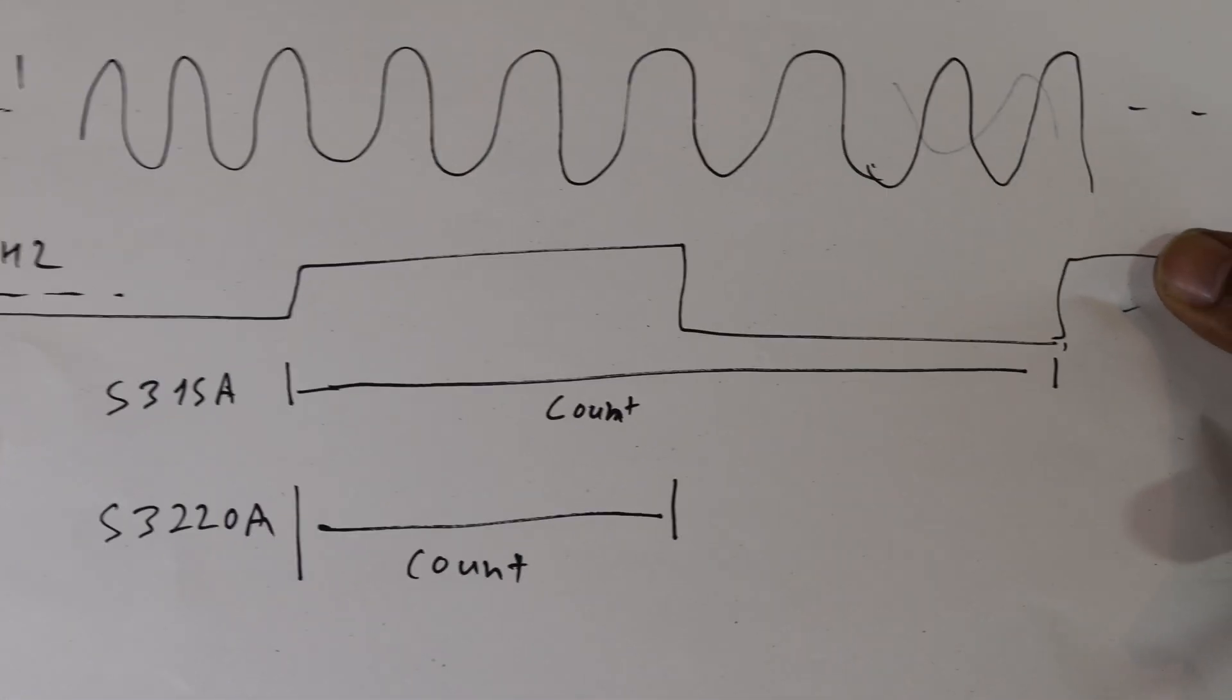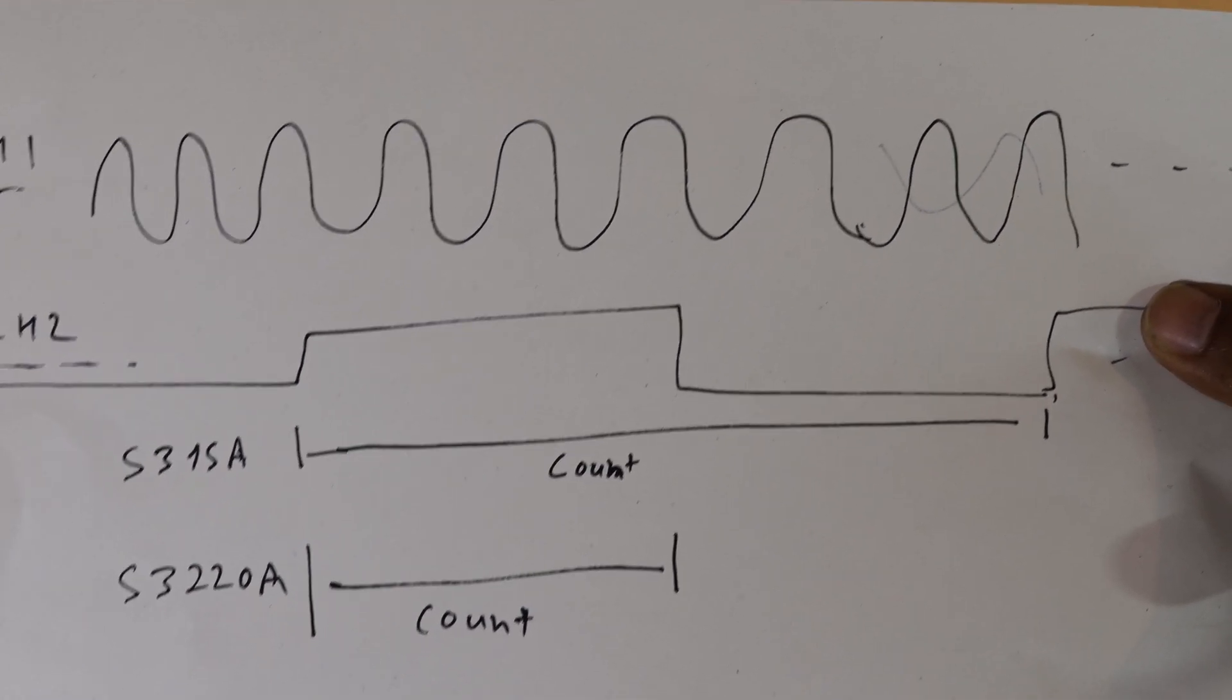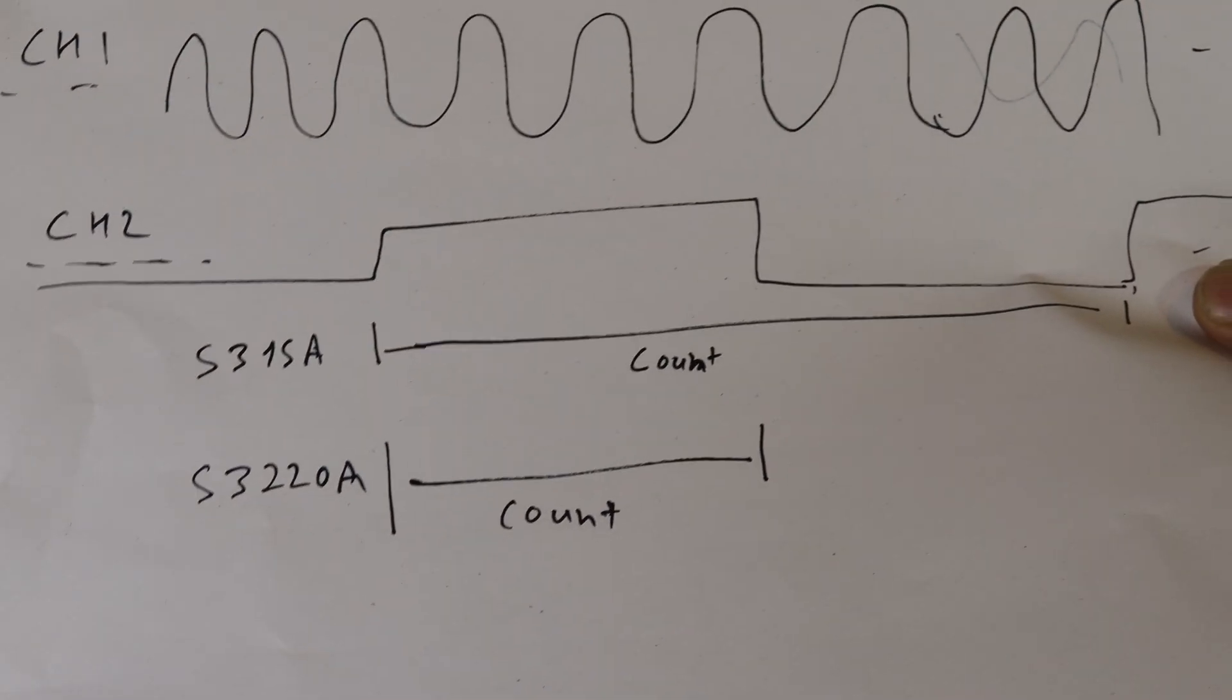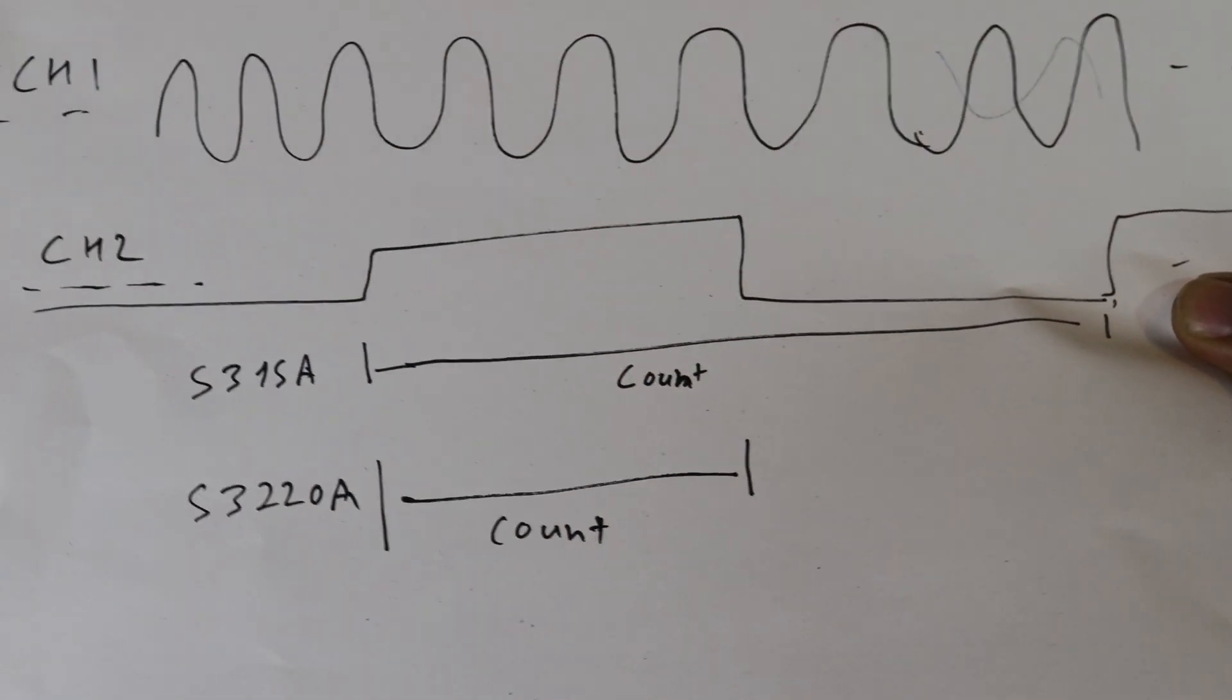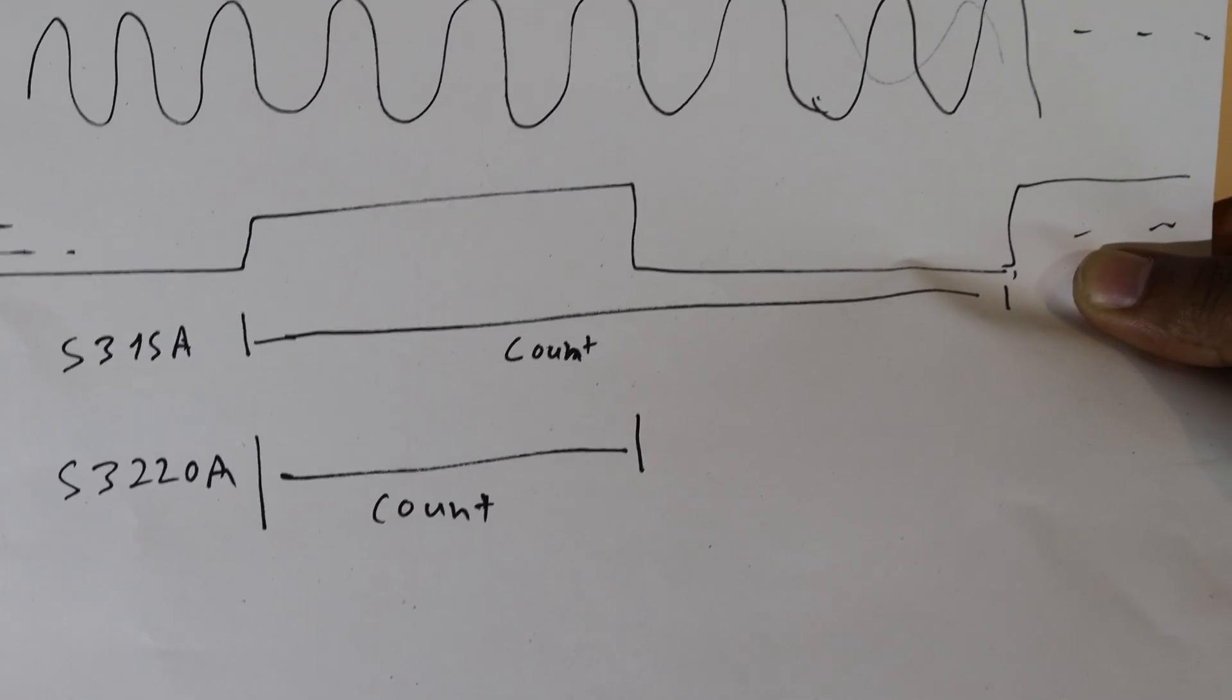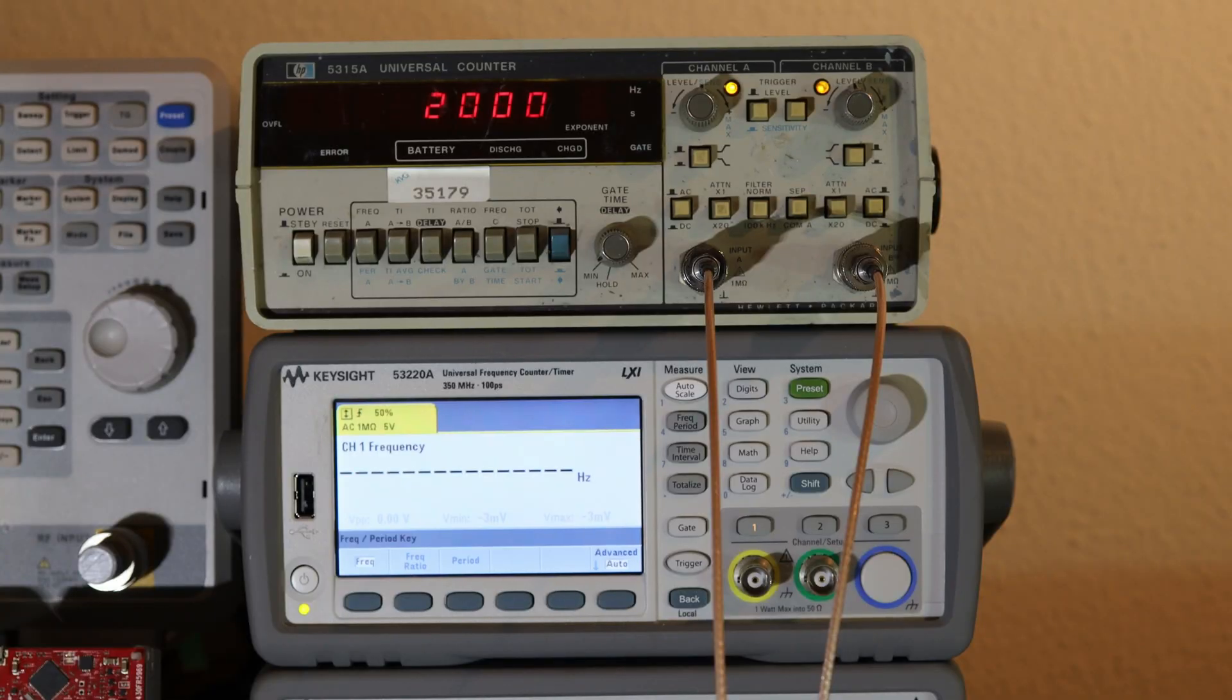So the limitation I'm going to talk about here is the minimum gate time of 53220A which is limited to 100 microseconds. Specification of 53220A specifies minimum gate time to be 100 microseconds. So from here to here, minimum allowed gate time is 100 microseconds, which also limits how fast these channel 2 pulses come.